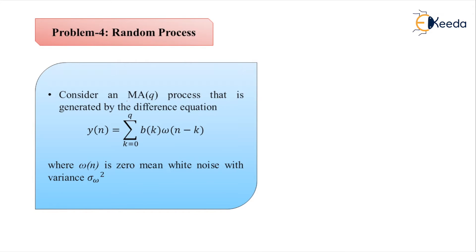The moving average MA(q) has p=0, and the previous AR(p) had q=0. Both are derived from the auto regressive moving average process ARMA(p,q). For that topic, the filter function H(z) was established. We can recall that H(z) and substitute p=0 to get the moving average process, or substitute q=0 to get the auto regressive process.